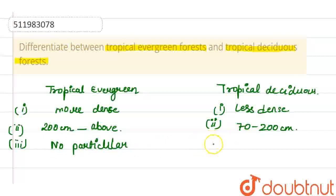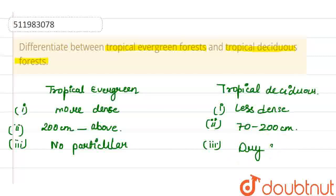Whereas in tropical deciduous forests, the leaves are shed in the dry season.